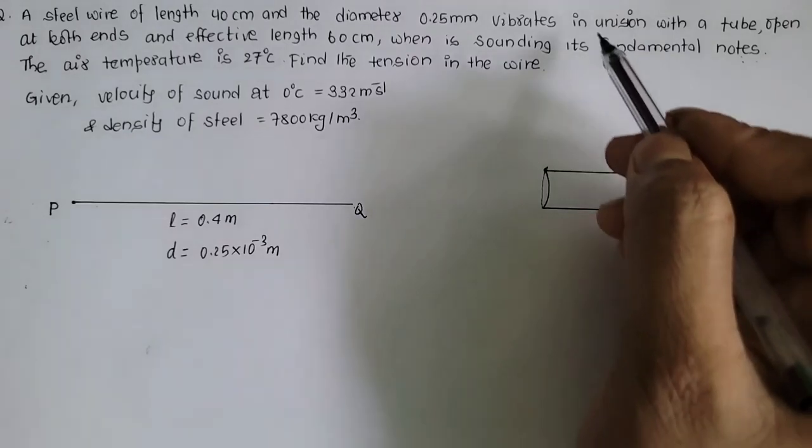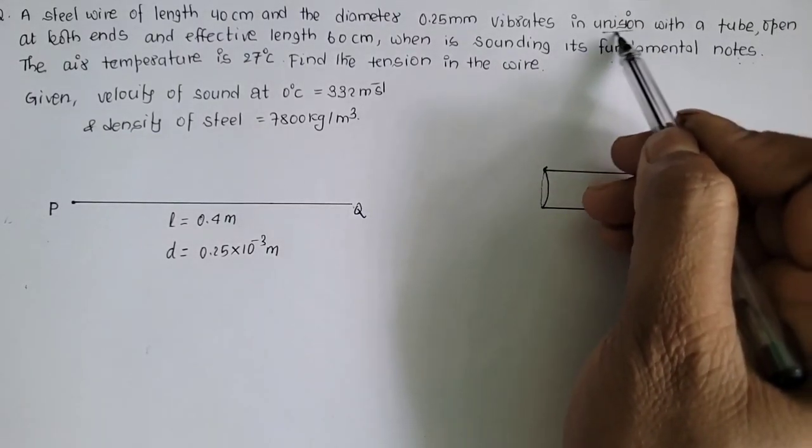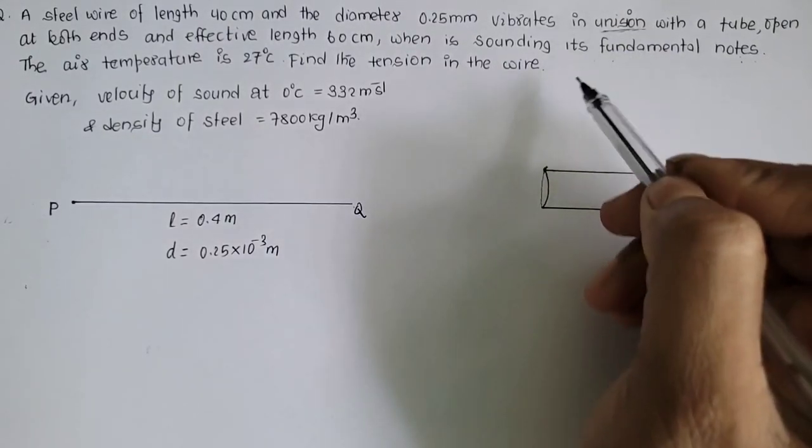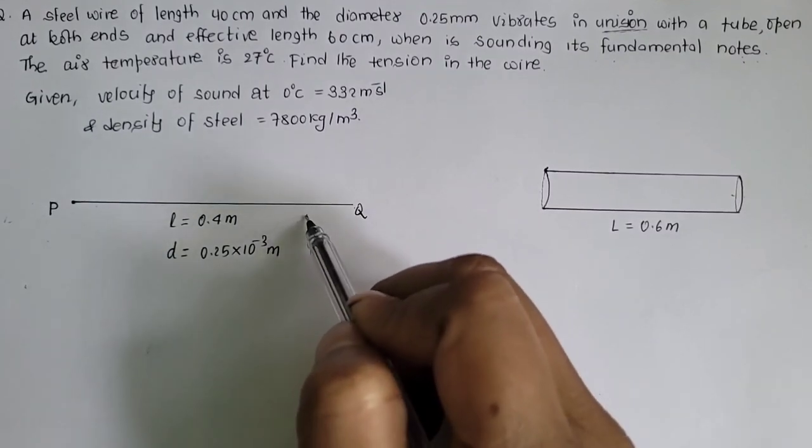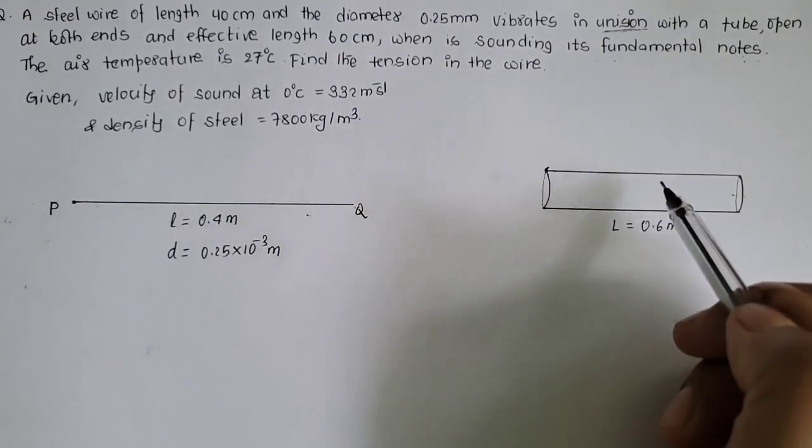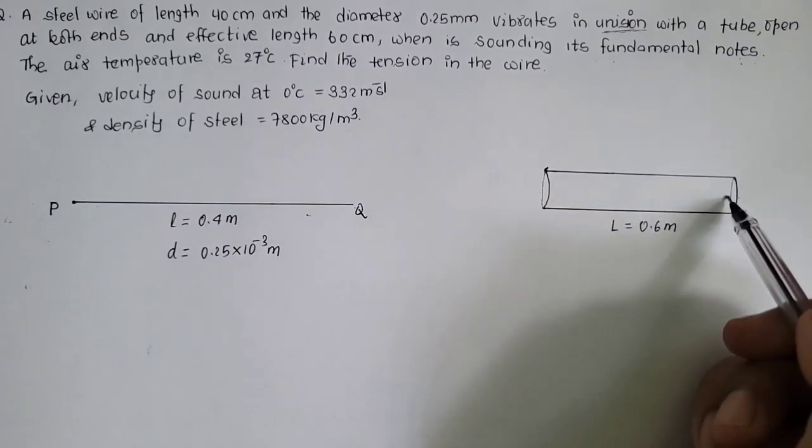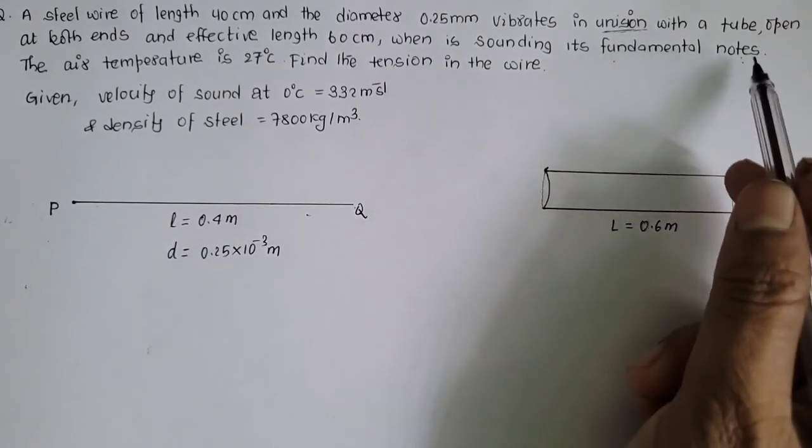Question ma dekhosa, they are in unison. It means unison manu ko meaning, yyo string pa da fundamental mode of vibration ma, yyo frequency of sound produce vahir aagosa, yyo frequency of sound, yyo tube ko fundamental mode of vibration ma obtain ga iraagosa.